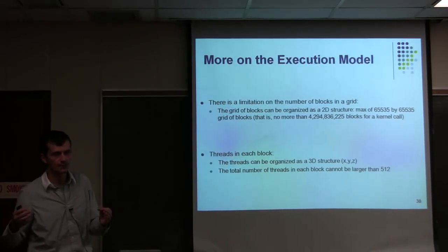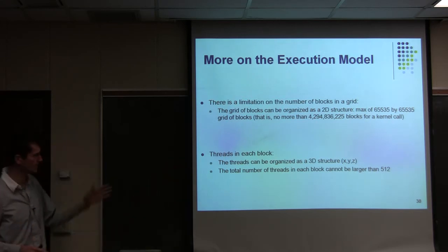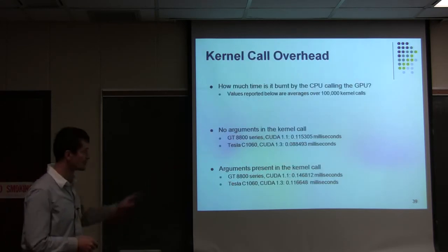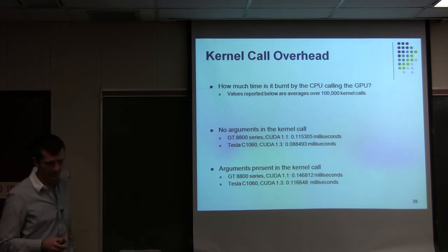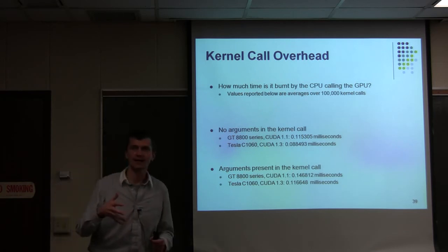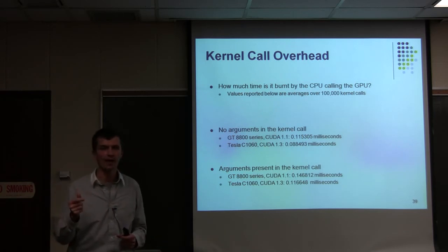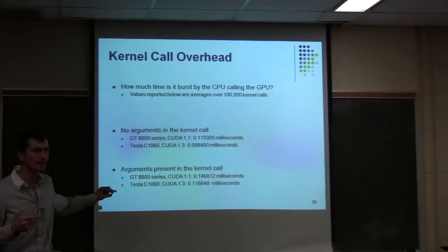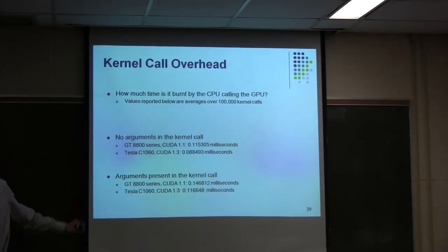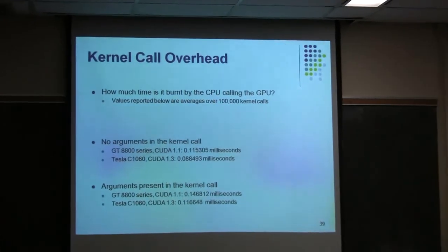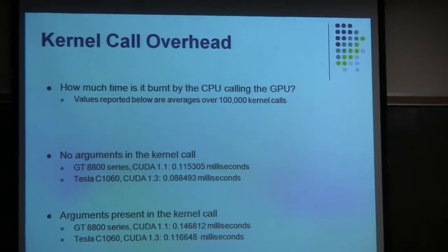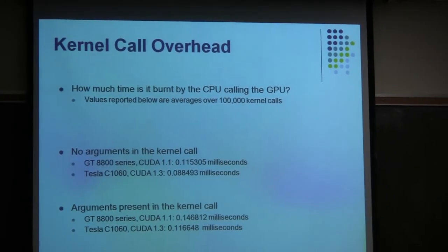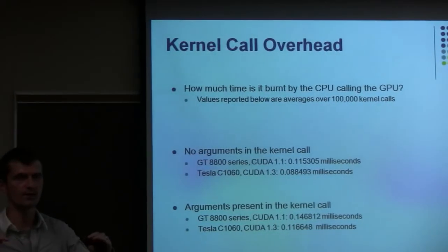With blocks, there is also a limit. You can have a two-dimensional array of blocks, and the X and Y limits are each 65,535. So effectively you can have no more than about 4 billion blocks in a kernel call. Every one of those blocks can have 512 threads, so that's 1 trillion thread executions. You cannot execute one kernel more than 1 trillion times — if you need more, you'd have to loop and invoke it again. But that's a limitation most people don't run into.